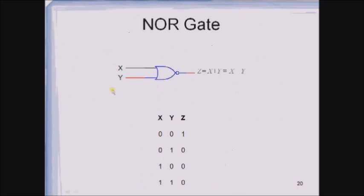This is the symbol for representing the NOR gate, where it is receiving X and Y as inputs. The output is Z equals (X + Y)̄. If we apply De Morgan's theorem on this expression, then we will get X̄ · Ȳ. And this is the truth table of the NOR gate.